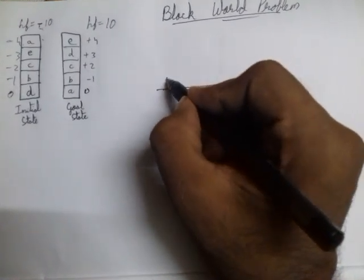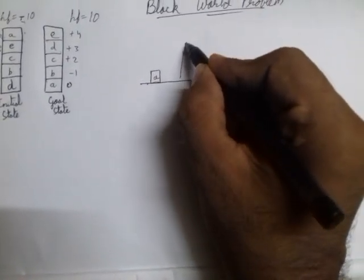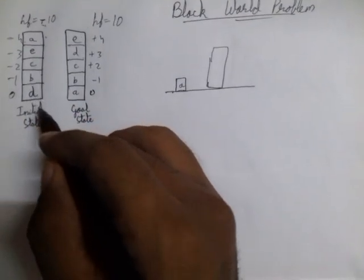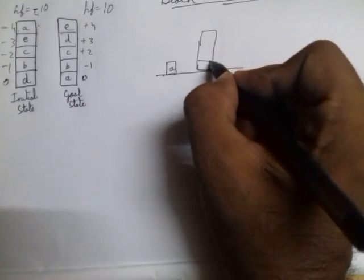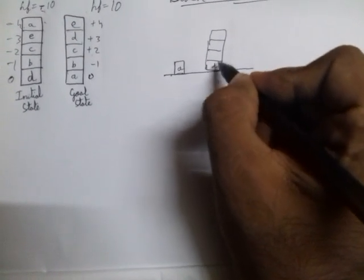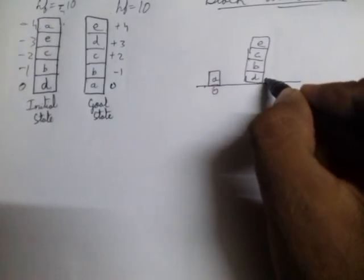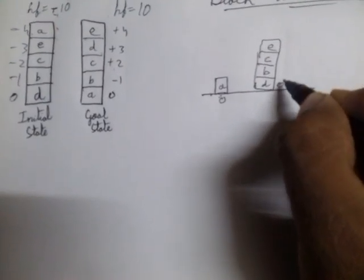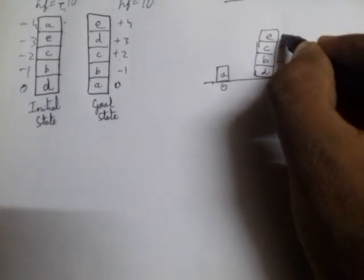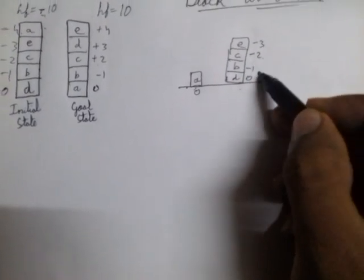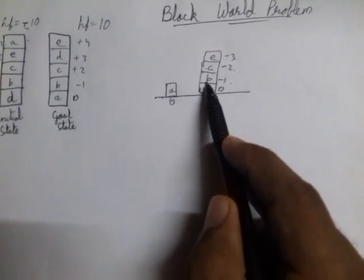Take block A — the first block in the initial state — and put it on the ground. Always work from the initial state only. The remaining blocks D, B, C, and E stay as they are. If any block is placed on the ground, its value becomes zero. So D is 0, B is -1, C is -2, and E is -3, giving a total hf of -6. We have moved from -10 to -6.